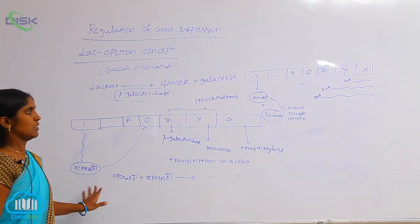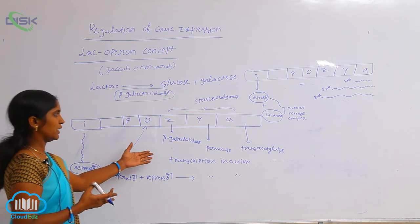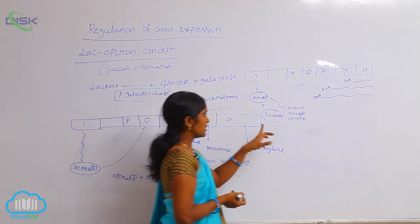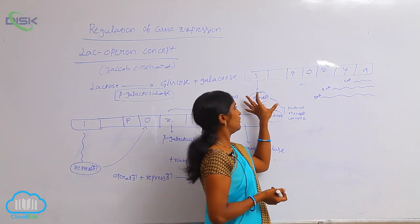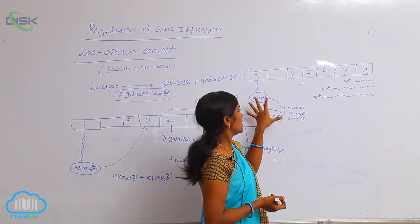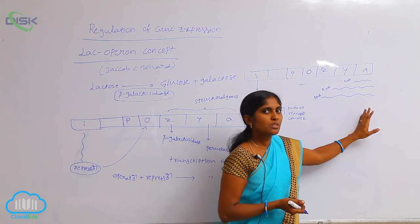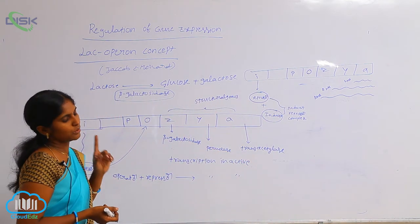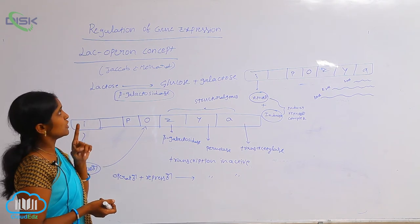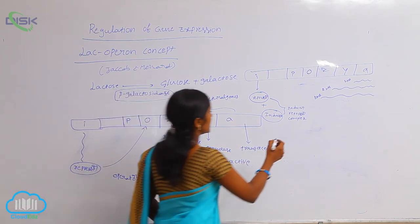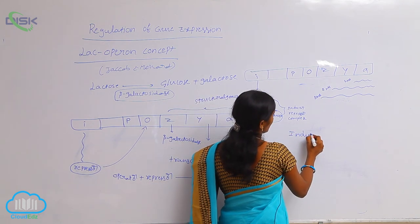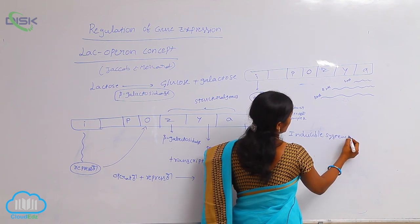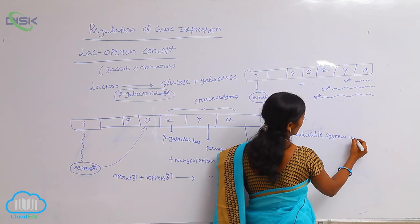In the absence of lactose, there is no transcription — no production of beta-galactosidase, permease, or transacetylase. But in the presence of the inducer, the inducer binds with the repressor, stops the action of the repressor, and transcription continues. This is the regulation of gene expression, also called an inducible system — the inducible system in E. coli.